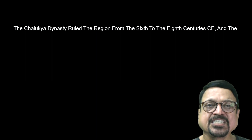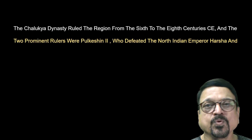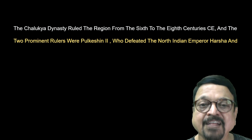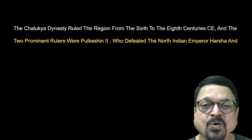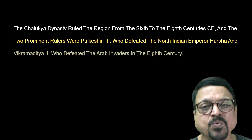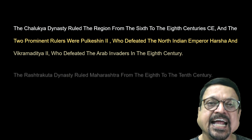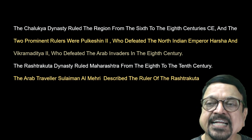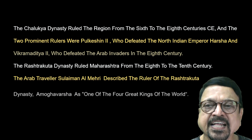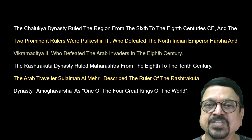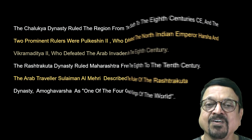Then came Vakatakas, Kadambas, then the Chalukya Empire, Rashtrakuta dynasties, and Western Chalukyas, followed by Yadavas. The Chalukya dynasty ruled the region from the 6th to the 8th century CE. Two prominent rulers were Pulakeshi II — whom we studied when covering Badami — and Vikramaditya II, who defeated the Arab invaders in the 8th century. The Rashtrakuta dynasty ruled Maharashtra from the 8th to 10th century. The Arab traveler Suleiman described the Rashtrakuta ruler Amoghavarsha as the strongest king of that era in the world.